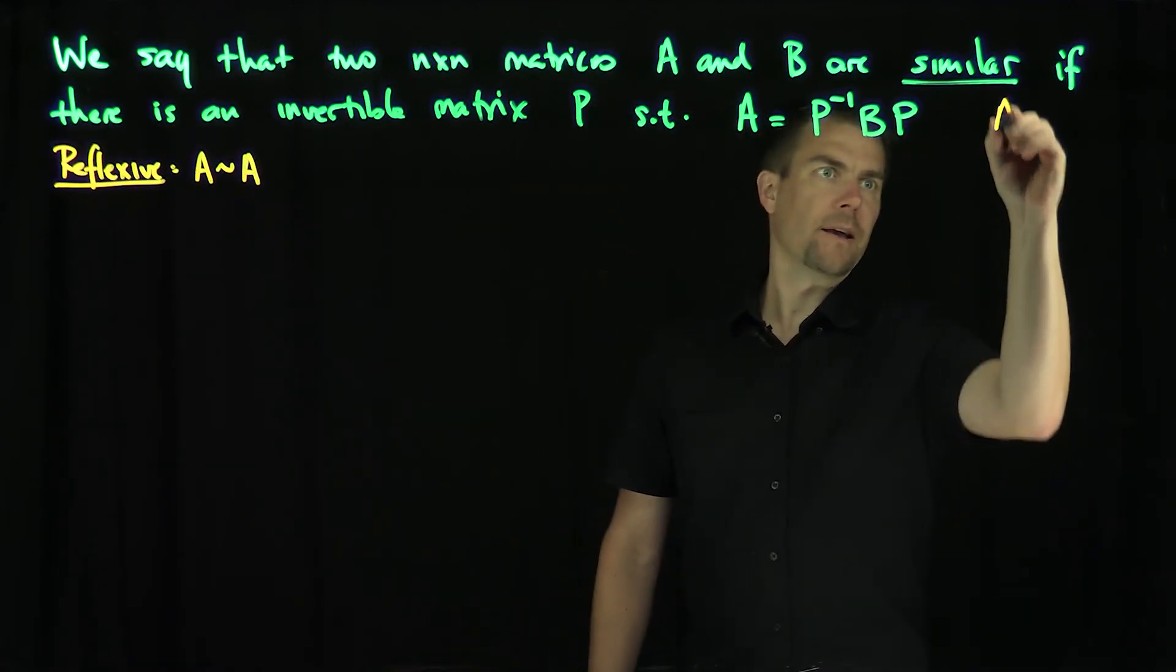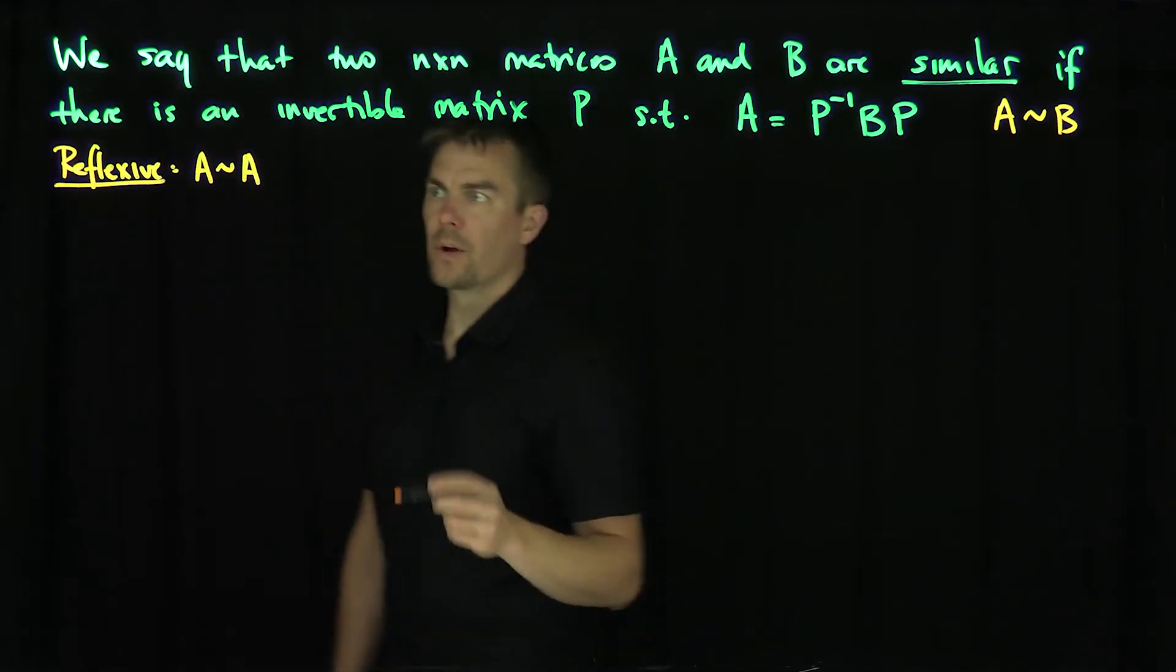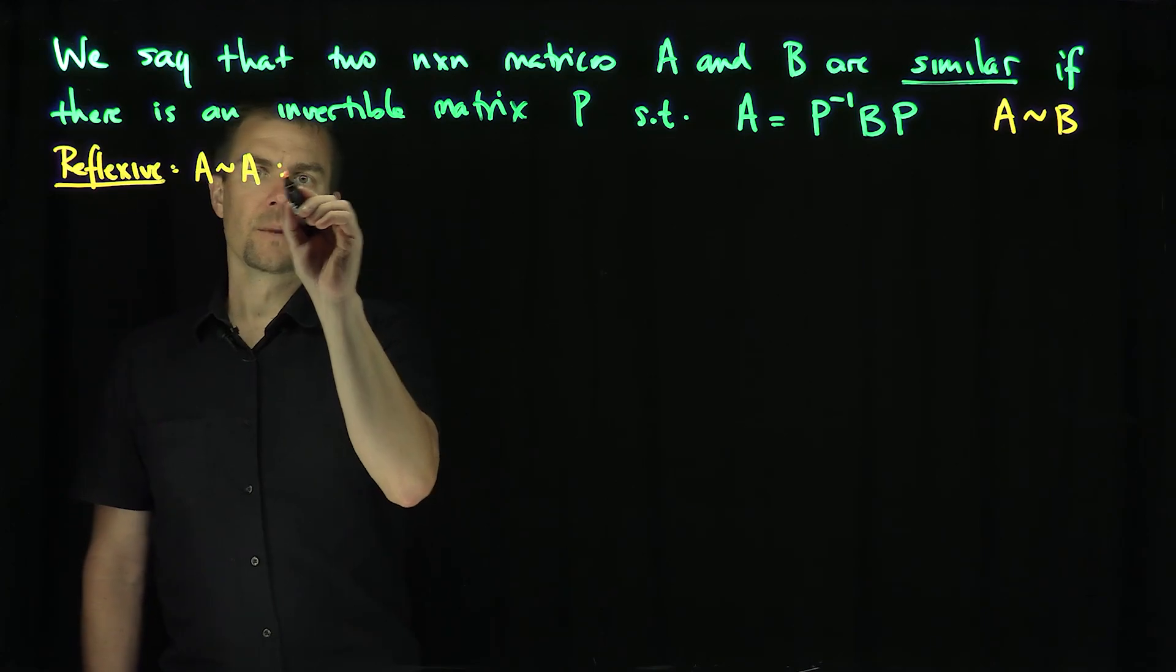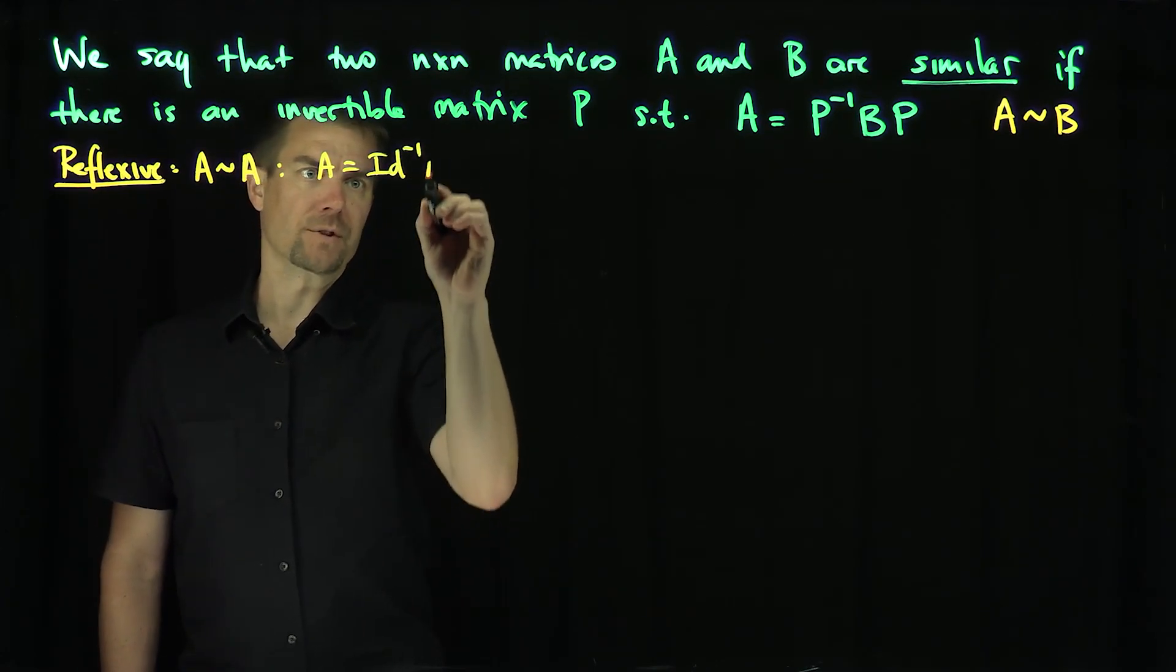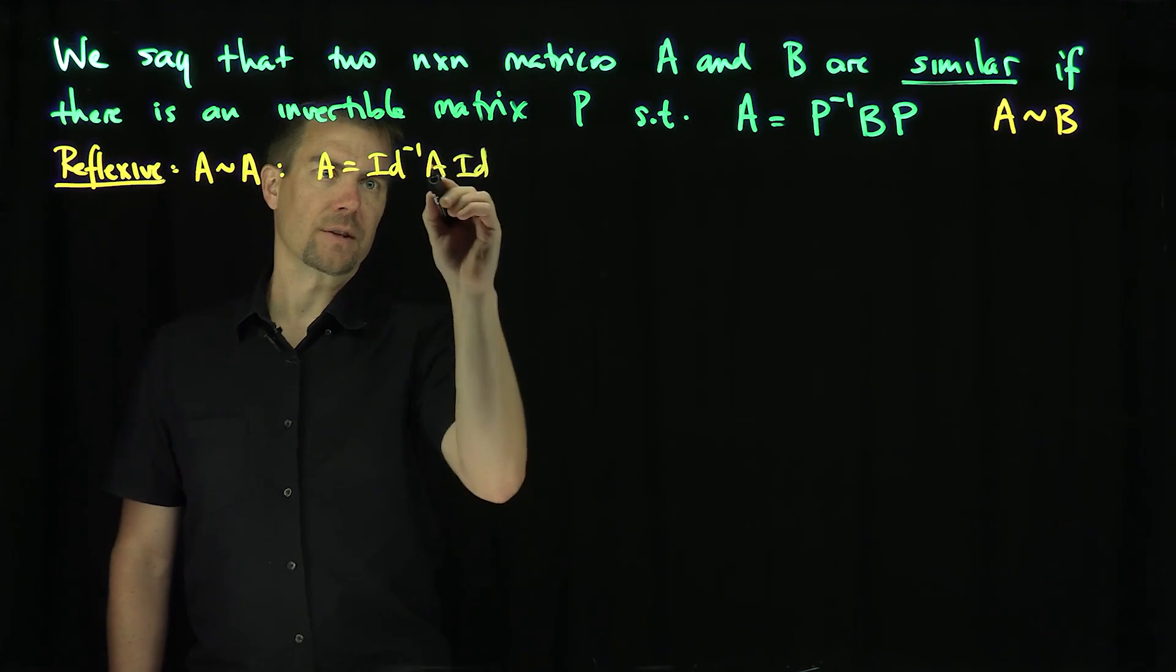We'll write A tilde B for A similar to B. So A is similar to itself. The proof is straightforward: A equals the identity inverse A identity.